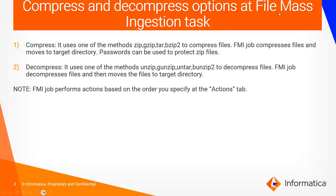Compress and decompress options at FMI task. Compress will compress the files and then the FMI job will move the files to the target directory. The methods available are ZIP, GZIP, TAR, and BZIP2. Any one of these methods you can use in order to compress a file. If you want, you can also provide a password for protection.